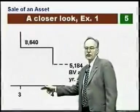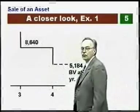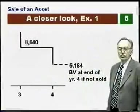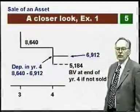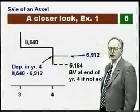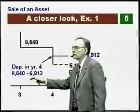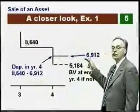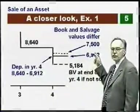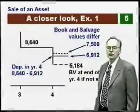Looking more closely at year four: the book value at the end of year three is $8,640. Normally we would drop this to $5,184, but because we're selling the asset, we're only allowed half the normal depreciation. The year four depreciation is the difference between $8,640 and $6,912. This $6,912 is the book value when we sell the asset. The salvage value of $7,500 is above that, and that difference between the salvage value and book value is a taxable gain.